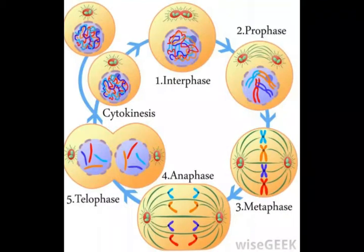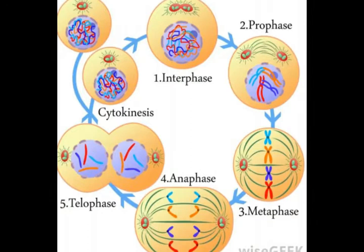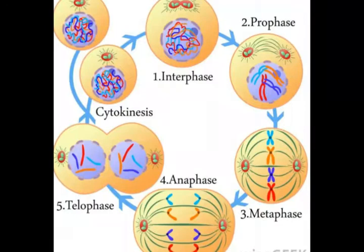Tubulin is a spherical protein usually found in eukaryotic cells that comes in many forms, all of which play vital roles in the structure and function of the cell. The alpha and beta forms of these proteins are the basic building blocks of microtubules, one of the main components of a cell's cytoskeleton.